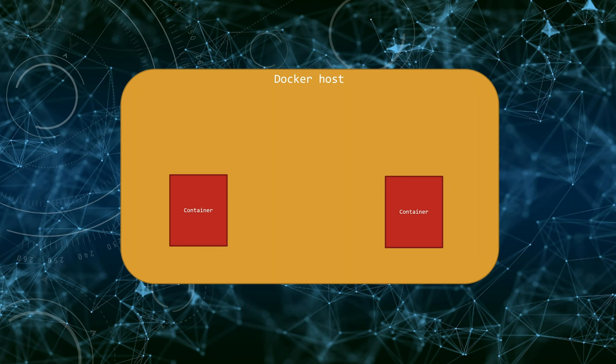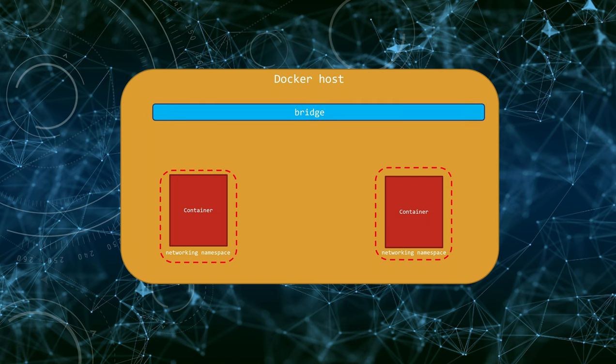In the last few videos, we've discussed how containers on the same Docker host can communicate with each other and also with the external world. Just to quickly recap, each container has its own networking namespace that provides network isolation. By default, every new Docker network is a bridge on the host. Container networking interfaces are plugged into the bridge using a virtual Ethernet pair. With this technology, containers connected to the same bridge can talk to each other freely.